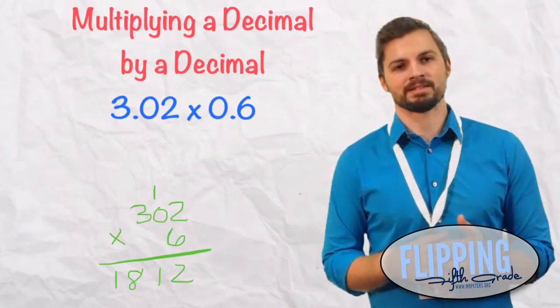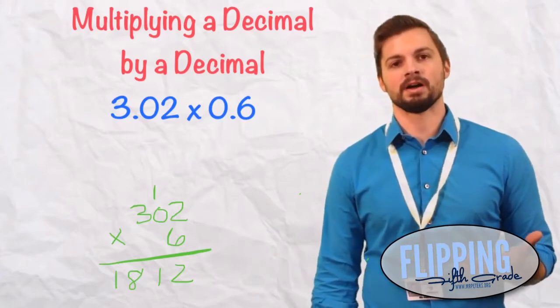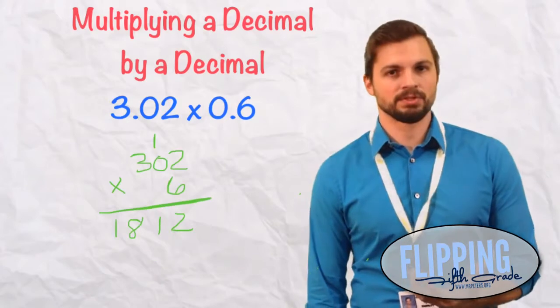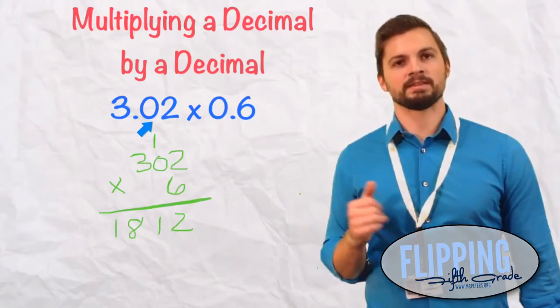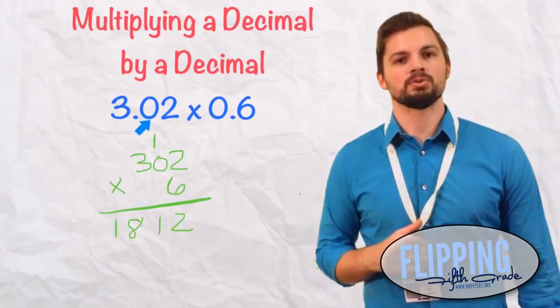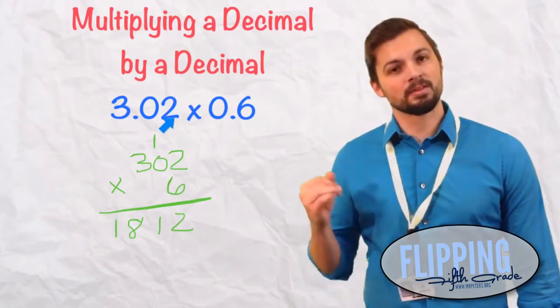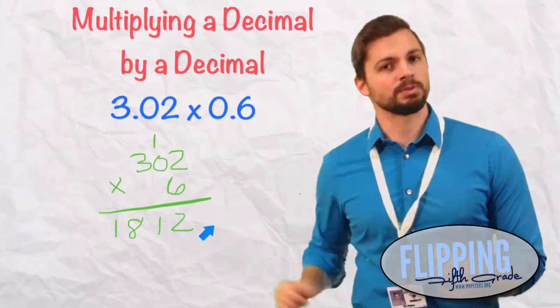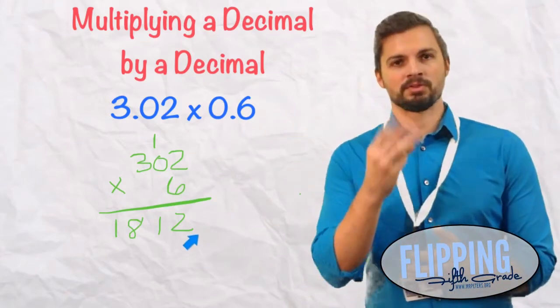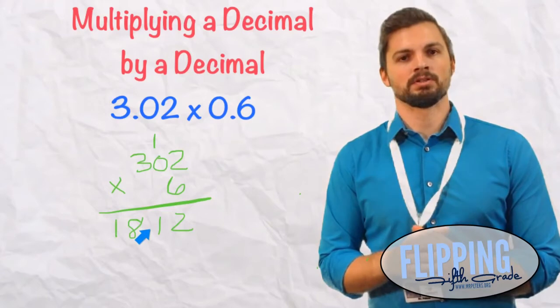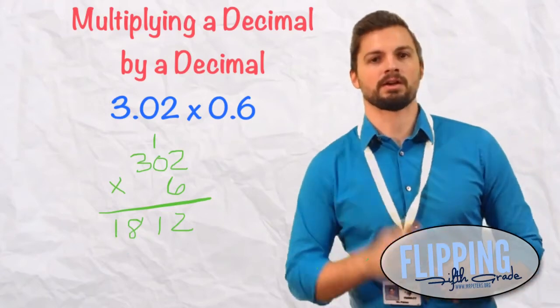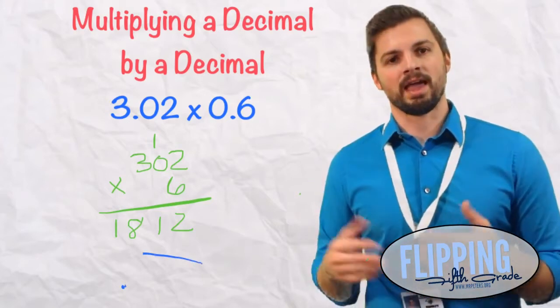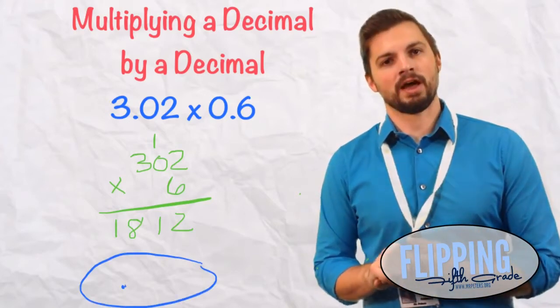Now we know that doesn't make sense. You're not going to take 3 times a number less than 1 and get 1812. So what we have to do now is count the digits behind the decimal. When we look at the top number, there are 2 digits behind the decimal. And the bottom one, there's only 1. 1 plus 2 is 3. So we start to the right of the 2. We need to move it 3 spots. So 1, 2, 3. There it goes. So now it goes between the 1 and the 8. So our actual answer is 1 and 812 thousandths.